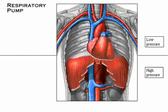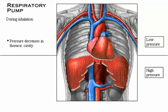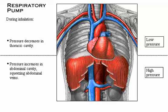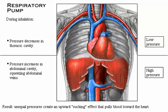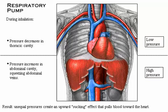Pressure changes occurring in the ventral body cavity during breathing create the respiratory pump that sucks blood upward toward the heart. As we inhale, pressure in the thoracic cavity decreases, while pressure increases in the abdominal cavity, squeezing abdominal veins. These unequal pressures create an upward sucking effect that pulls blood toward the heart.